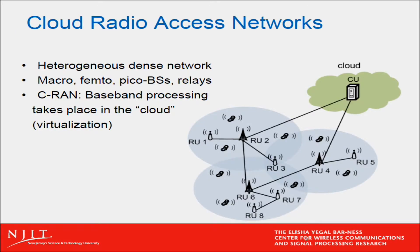To introduce the idea of Cloud RAN, consider the increasingly common scenario of a heterogeneous dense cellular system where we have cells of different sizes — conventional macro, but also pico and femto cells — served by base stations of corresponding different sizes: macro, pico, and femto base stations.